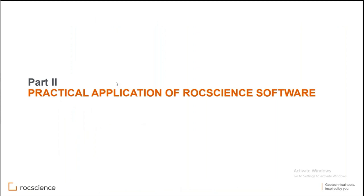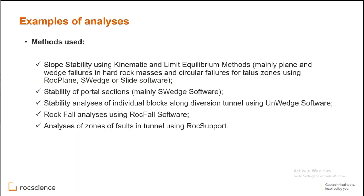The second part covers practical application of RockScience software. Many known methods were used to solve stability: kinematic and limit equilibrium methods for plane failures and wedge failures in hard rock masses, and circular failures in talus zones using Rock Plane, S-Wedge, or Slide software. Portal sections of the tunnel were analyzed mainly with S-Wedge software. Stability analysis of individual blocks along the diversion tunnel used Un-Wedge software. Rock fall analysis was performed using the older version of RockFall software. Zones of faults in the tunnel were analyzed using Rock Support software.